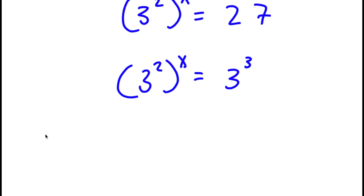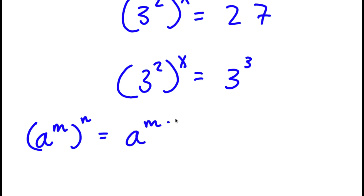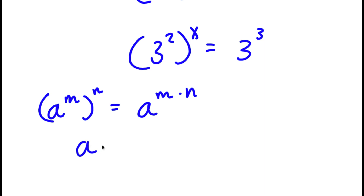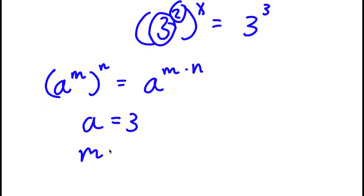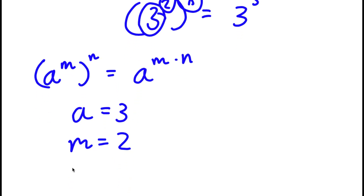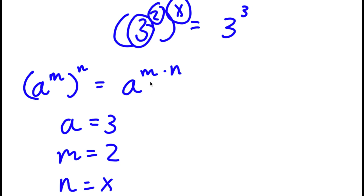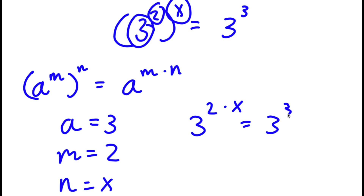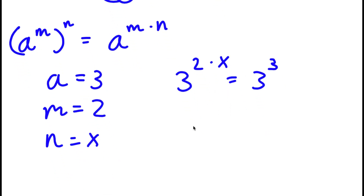Using the rule that a to the power of m to the power of n equals a to the power of m times n, I have base a equals 3, m equals 2, and n equals x. So this becomes 3 to the power of 2 times x, which is 3 to the power of 2x, equals 3 to the power of 3.